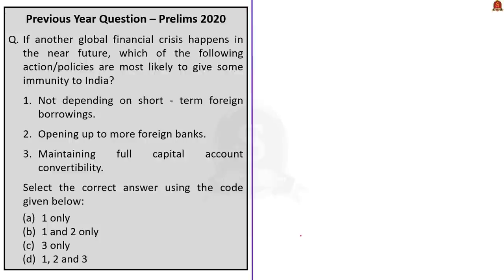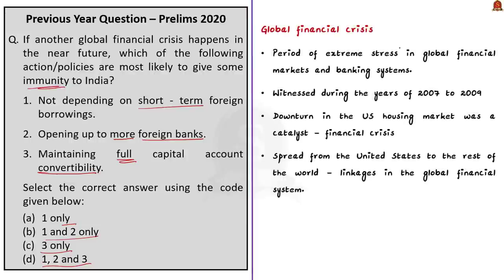Moving to the second question: if another global financial crisis happens in the near future, which of the following actions or policies are most likely to give some immunity to India? Statement 1: not depending on short-term foreign borrowing. Statement 2: opening up to more foreign banks. Statement 3: maintaining full capital account convertibility. The global financial crisis refers to a period of extreme stress in global financial markets and banking systems, witnessed during 2007–2009, where a downturn in the US housing market spread from the United States to the rest of the world due to linkages in the global financial system.